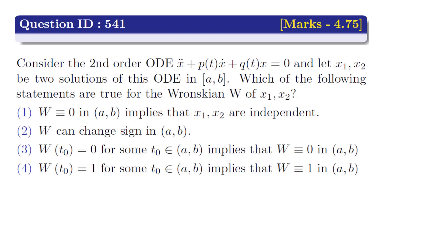Option 2: W can change sign in open interval (a, b). Option 3: Wronskian at t0 is 0 for some t0 belonging to open interval (a, b) implies Wronskian is 0 in open interval (a, b). Option 4: Wronskian at t0 is equal to 1 for some t0 belonging to open interval (a, b) implies that Wronskian is equal to 1 in open interval (a, b).